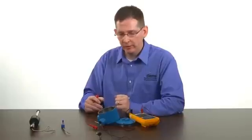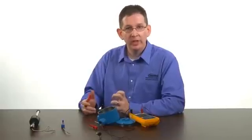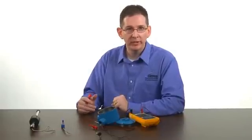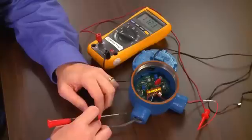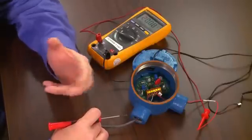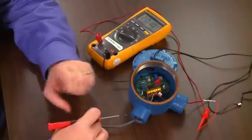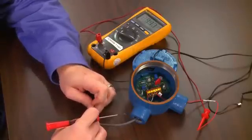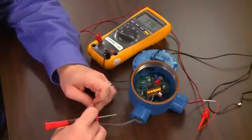Once you have your potentiometer connected we want to establish the direction of raising and lowering its output. Turning the potentiometer clockwise you'll notice on the multimeter that the output goes towards 20 milliamps. Counterclockwise the output drops towards 4 milliamps.